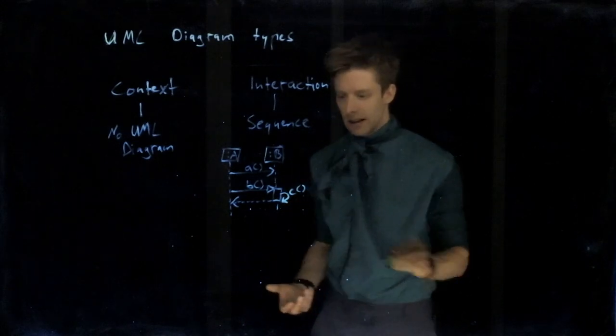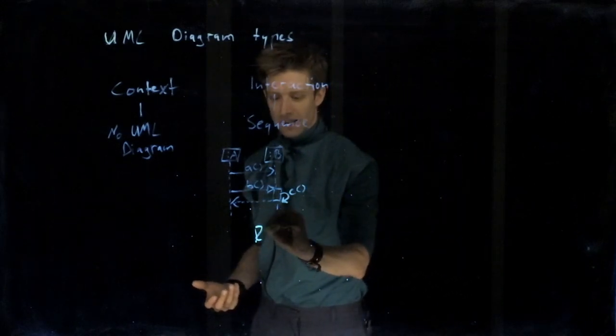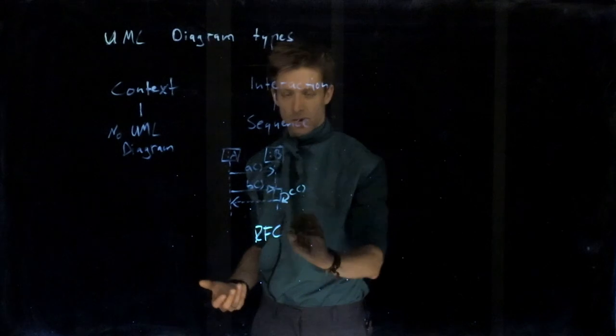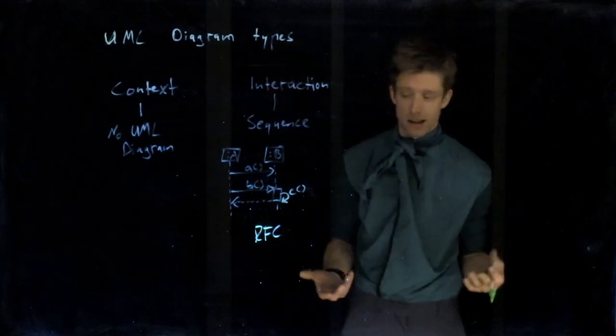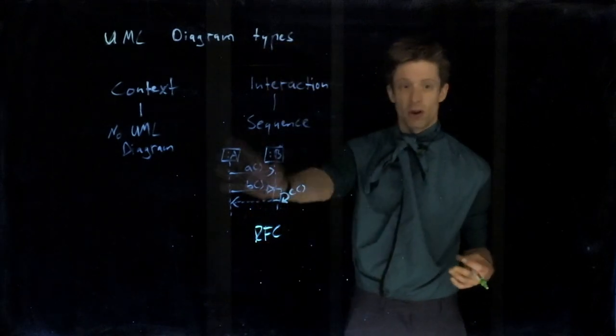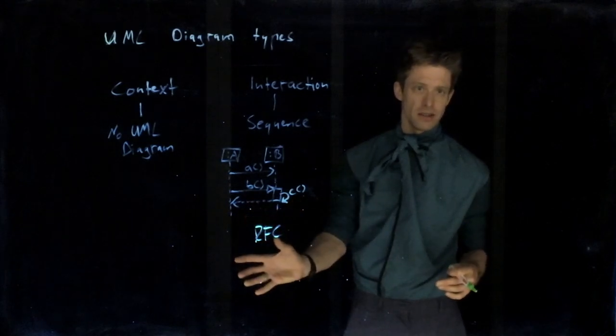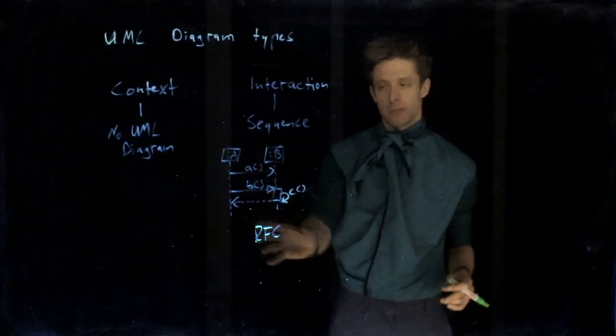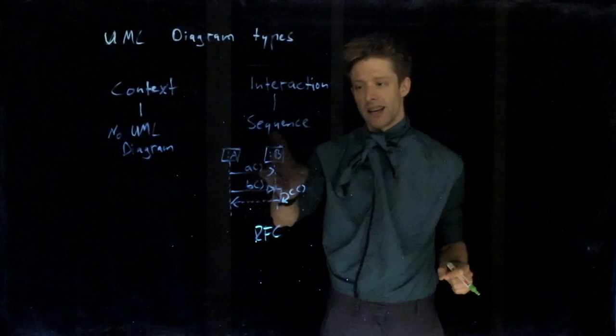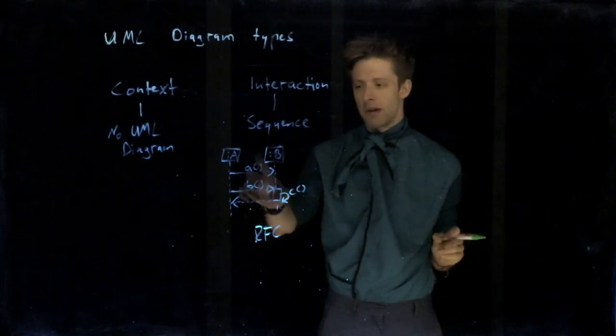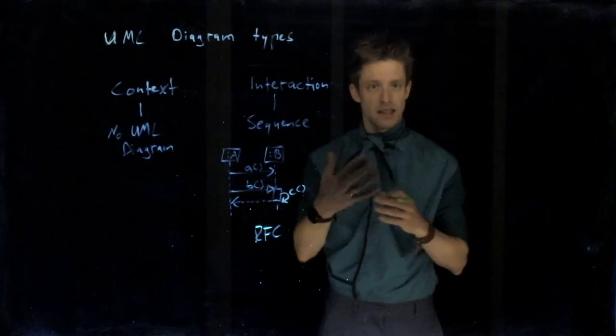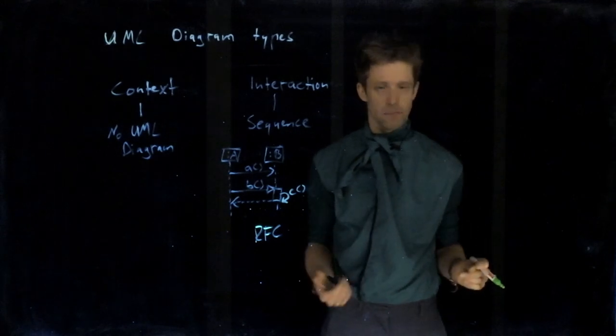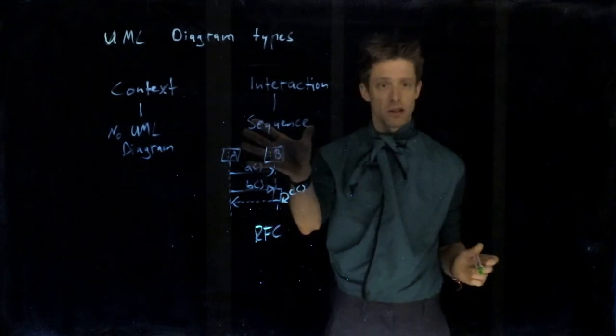These things are very common if you go into the network area. In a lot of the standards and in a lot of the RFCs, request for comments that describe network standards like TCP IP, you find drawings that look exactly like sequence diagrams. For them, this perspective is really important. They don't care what A or B are doing internally, but it is really important what is being sent in which order between them.